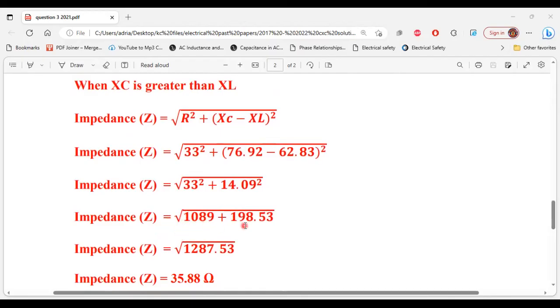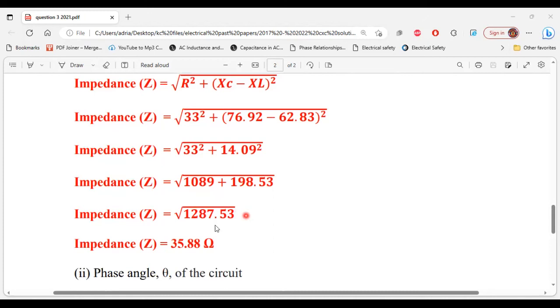And that will give us a square root of 1287.53, and that is equal to 35.88 ohms. So this is the circuit impedance.